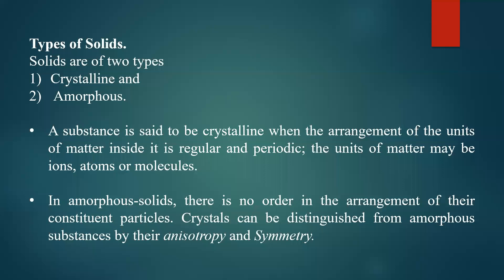Anisotropy means symmetry may be different along different directions. A cube has isotropic symmetry, whereas a rectangular box has anisotropic symmetry — length, width, and height are different. In a cube, all dimensions are the same along each direction, so it has isotropic symmetry. Repetition of that cube can describe the entire structure, which is the meaning of symmetry.